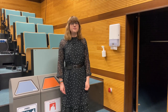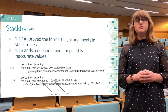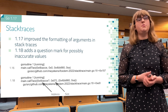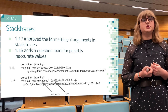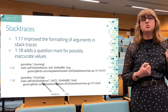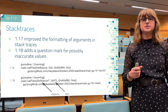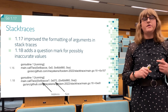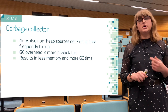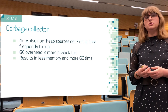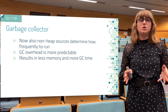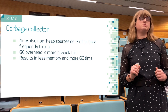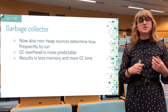Now we're going to take a look at changes to the Go runtime, specifically stack tracing and the Go garbage collector. Go 1.17 improves the formatting of function arguments when printed in a stack trace — it now adds curly brackets around the address and length pair, making them easier to understand. Go 1.18 adds a question mark when the Go runtime is unsure whether the address or length is actually correct. There is also some improvement to the Go garbage collector — it now looks at non-heap resources to determine when and how much to run. This makes the garbage collector more predictable. However, it spends more time running garbage collection, but that results in less memory being used. You can still tune it using the usual GOGC environment variable.